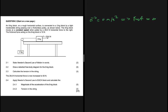It goes on to say: when pulled by a 29.6 N horizontal force to the right, the frictional force acting on the 8 kg block is 10 N.